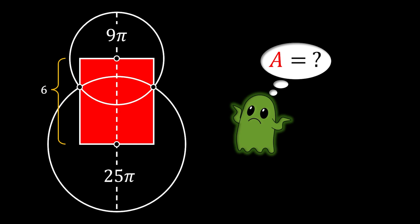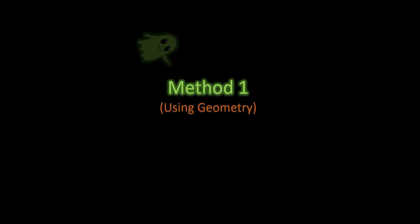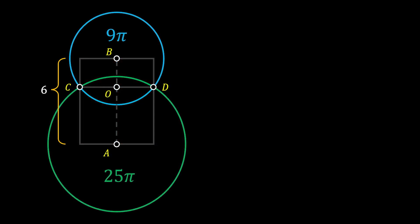All right, so let's solve this one. We're going to use two different methods to solve this problem. First, we are going to use the pure geometry method. We will start by labeling the centers of our two circles as A and B, then label their intersection points as C and D. Now we're going to draw the line from C to D and mark the intersection point between this line and our line of symmetry as O.